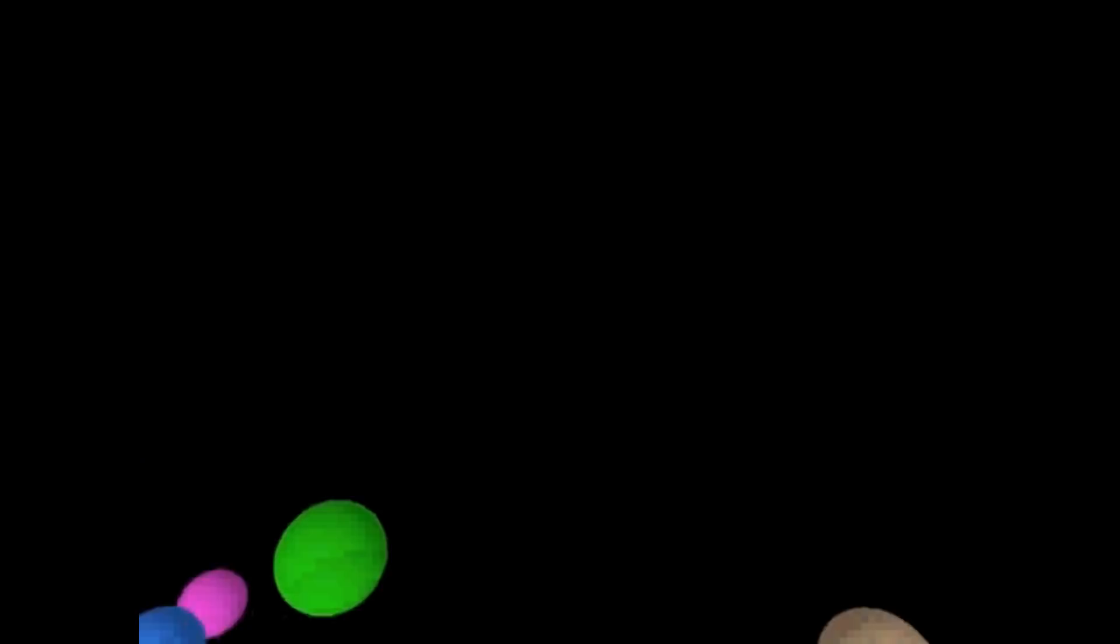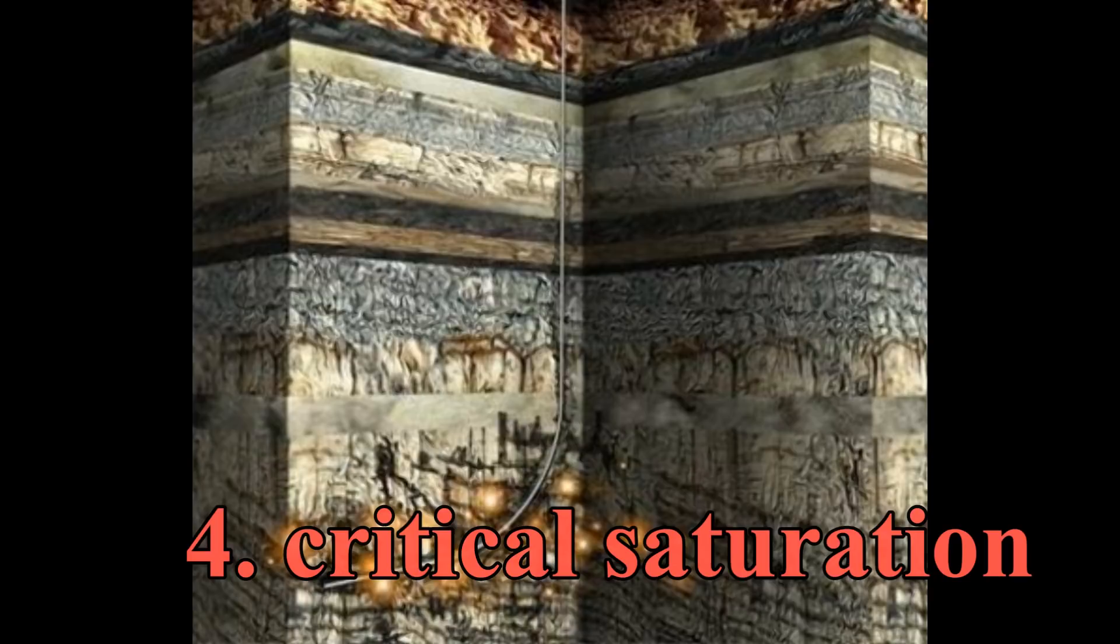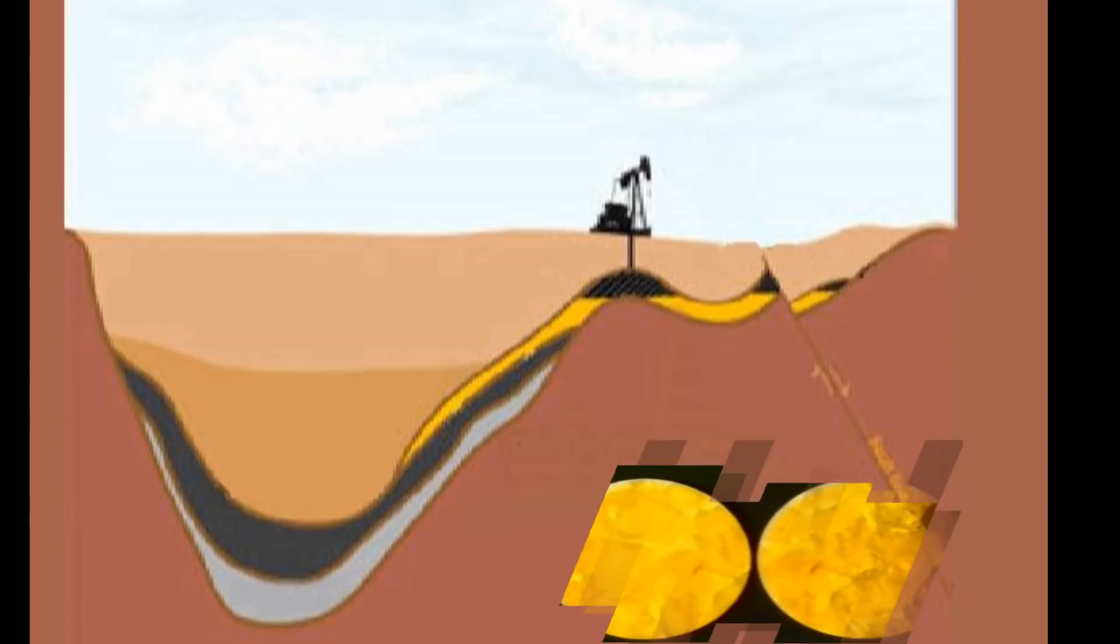Another term is critical saturation. This refers to the minimum saturation of oil, gas and water in a reservoir where the molecules are connected in such a way that they create a continuous medium. This medium allows the oil or water to flow to the surface.